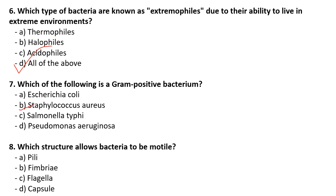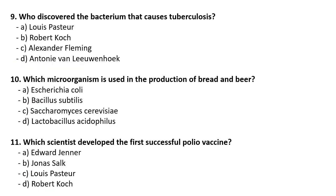Which structure allows bacteria to be motile? Flagella is the correct option. Who discovered the bacterium that causes tuberculosis? The correct answer is Robert Koch — he discovered that a bacterium is responsible for tuberculosis. Which microorganism is used in the production of bread and beer? We use Saccharomyces cerevisiae.